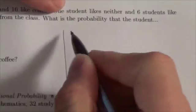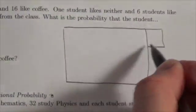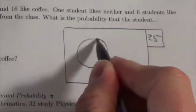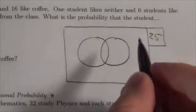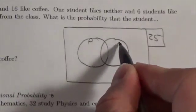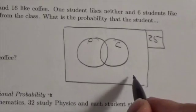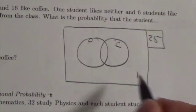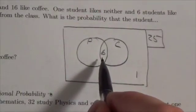The first thing we want to do is draw a Venn diagram to represent what's going on here. Our universe is 25 students and we've got two sets: pizza and coffee. One student likes neither, so that's going to be outside the sets. Six students like both, so the six go in the overlap.